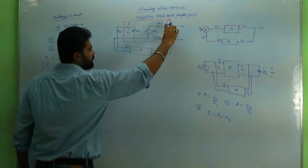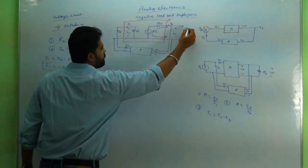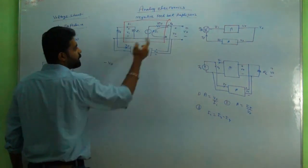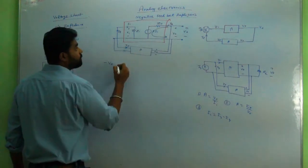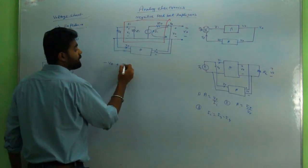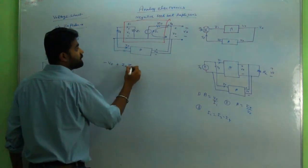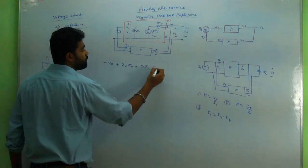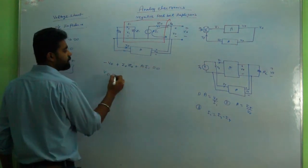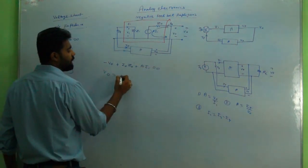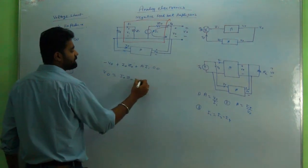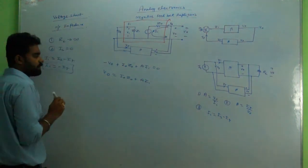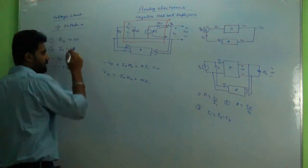Writing KVL: −V_naught + I_naught·Z_naught + A·II = 0. This gives us V_naught = I_naught·Z_naught + A·II.